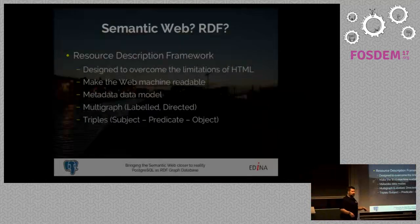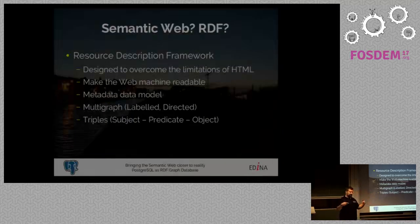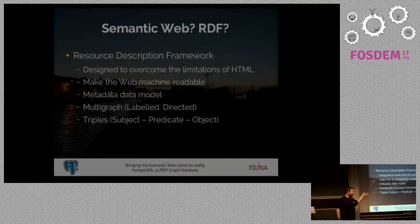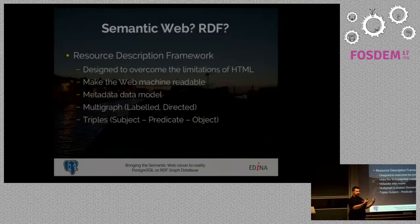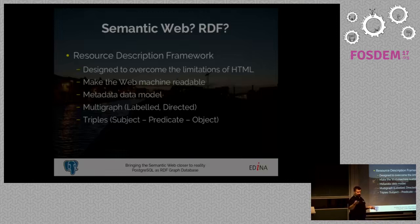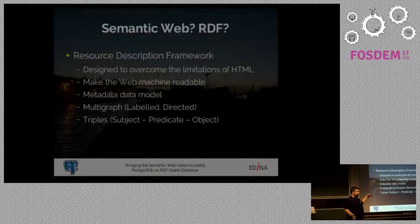RDF is a data model that lets you turn everything into a graph — actually a multi-graph, because multiple objects can have multiple things pointing to them. Strictly speaking in graph theory, it's a labelled and directed graph, which means that not only do objects have properties, but those properties usually have directions as well. So it's 'person A authored book A' — this is a direction, whereas you can't go back the other way using the property 'authored', because the book obviously hasn't authored the person.